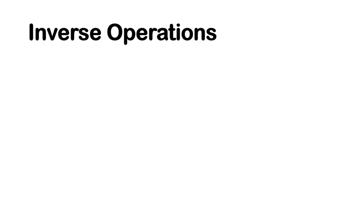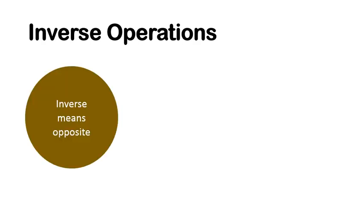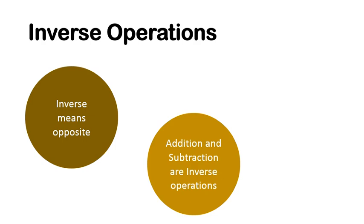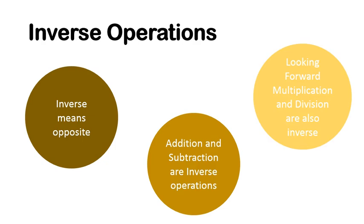The first thing we need to review is inverse operations. Inverse means opposite, so when we're talking about inverse operations, we're talking about the operations that undo each other, or the operations that are opposite of each other. Addition and subtraction are one example of inverse operations — adding and subtracting are opposite, they undo each other. Adding money and taking away money are examples of things that are opposite, so they are inverse. Looking forward, multiplication and division are also inverse — something to keep in mind for when you continue through this course.